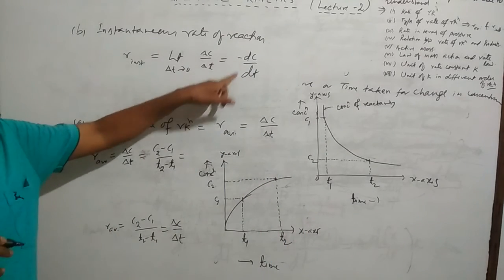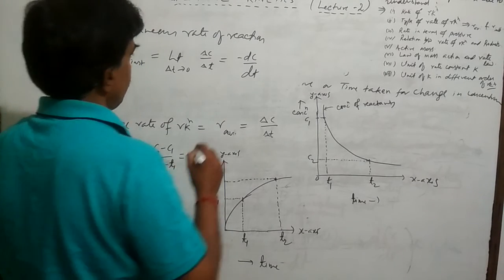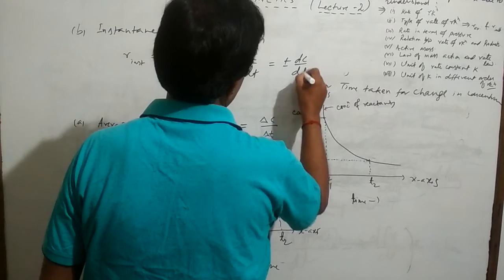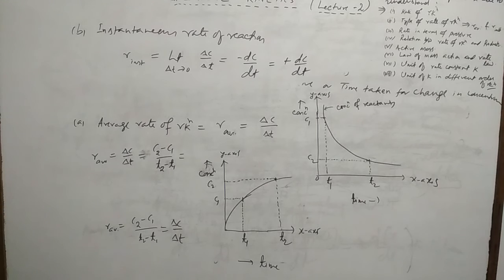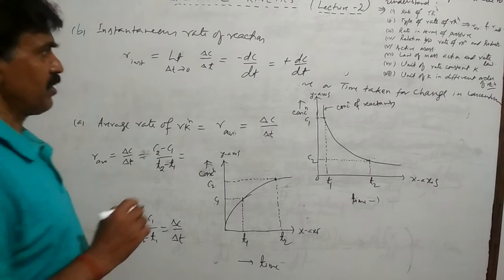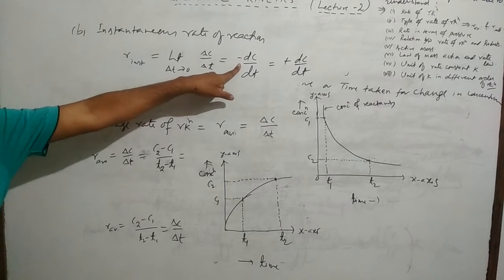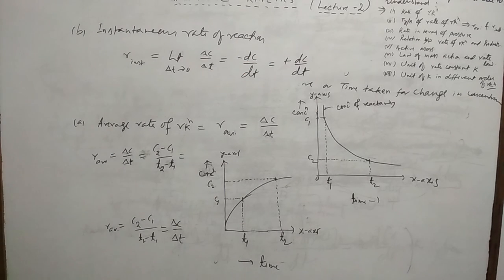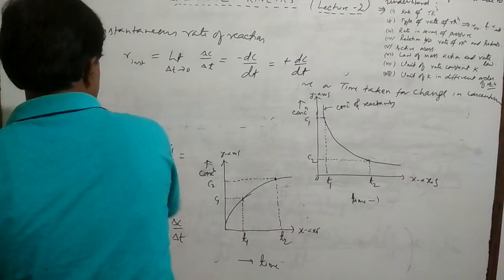Here the negative sign shows that the concentration of the reactant decreases with increase of time t, and concentration of the product increases with increase of time t. Here the negative sign indicates concentration of the reactant decreases with increase of time t. Now, if the graph is plotted simultaneously for reactant and product, then the graph may be represented as follows.